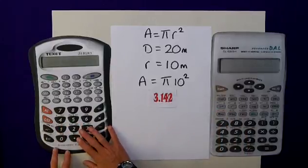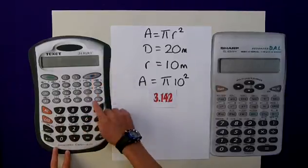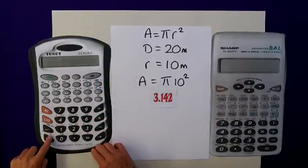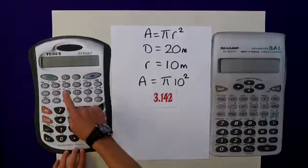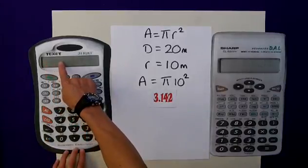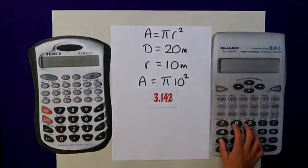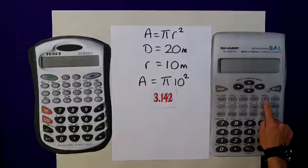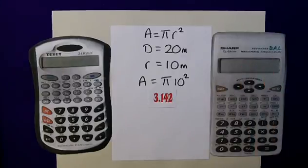On this calculator, you'll find it pressing the inverse button, which refers to the purple sections of the buttons, and it is just here, just above the EXP button. You will then need to press equals, and you will get 3.1415 and so many other digits here. On this calculator, it's a little bit easier. You just need to press this button here, and it will come up exactly on there.